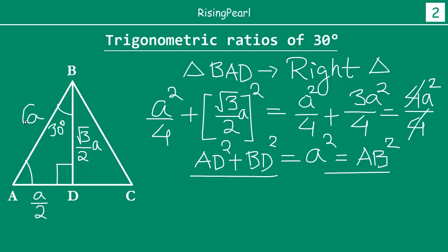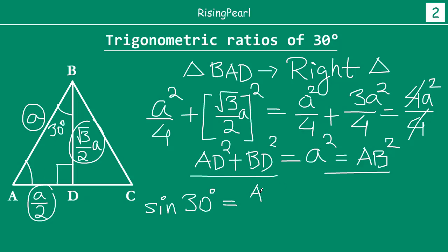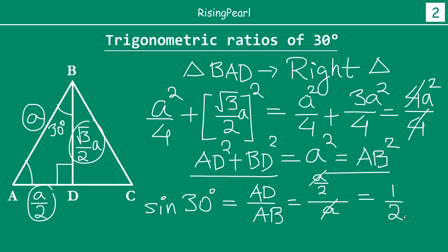Now we have the measures of all three sides, so we can easily find the trig ratios for 30 degrees. From webisode 3, trigonometric ratios express an angle in terms of ratios of sides. Sine 30 degrees is opposite side divided by hypotenuse. For the 30 degree angle, the opposite side is AD and the hypotenuse is AB. So sine 30 equals (A/2) divided by A, and A cancels, giving 1 over 2.